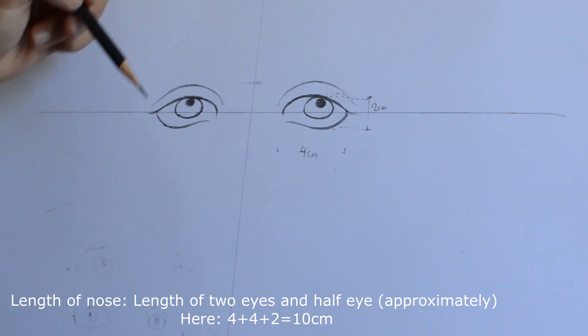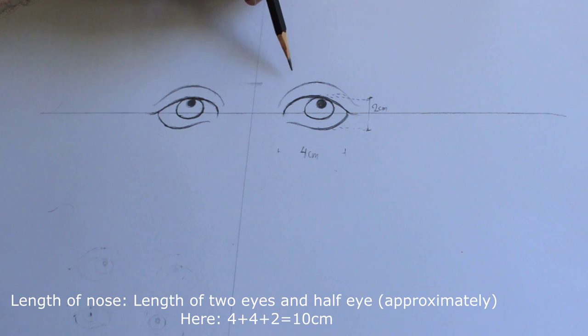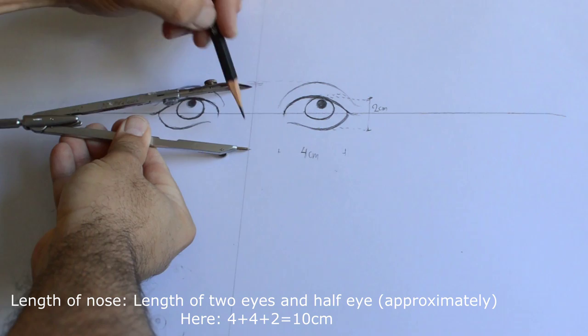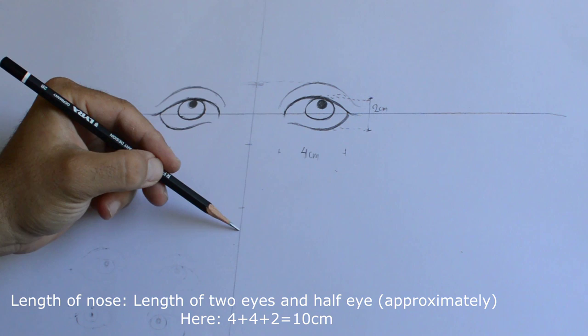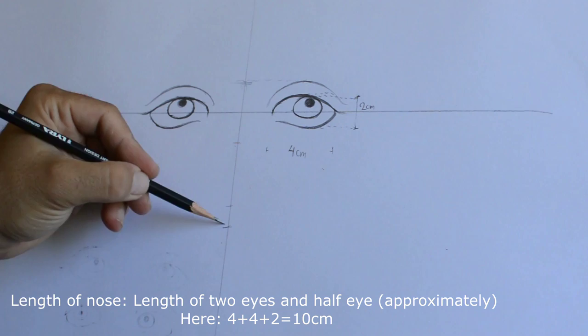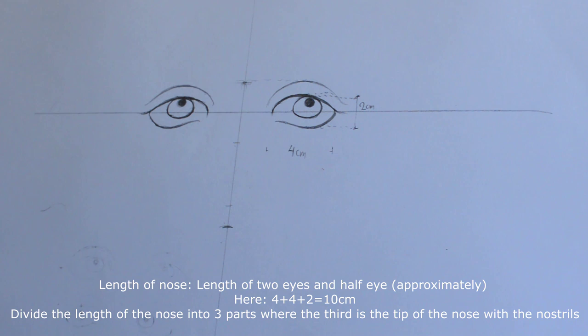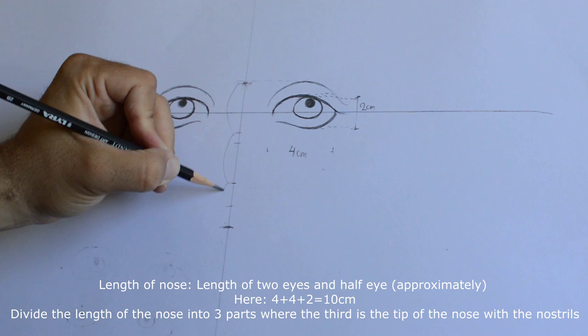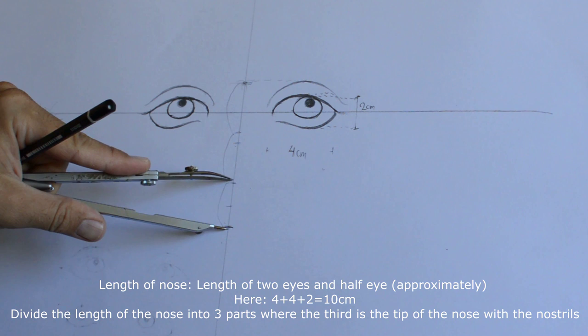So for the nose, the nose is almost something like two eyes and something in most cases. Like I measure two eyes and just a little bit more. In some cases the nose is just the length of two eyes, but in many cases most noses are two eyes and something more. So when I have this length of the total nose, I divide this length into three, into thirds.